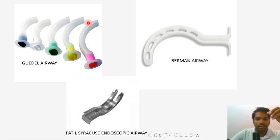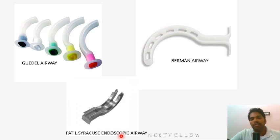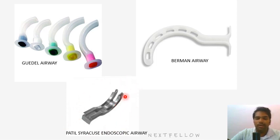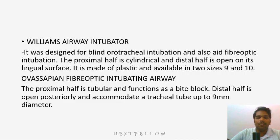Berman's airway differs from Guedel's in that the channels are open rather than closed. The advantage is that even if secretions block one area, the open channels allow continued breathing. The Patel-Syracuse endoscopic airway is used to insert an endoscope through its channel and is made of metal. Remember the picture and name for each of these airways.